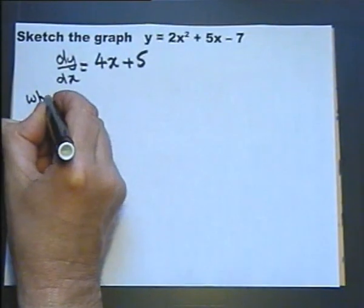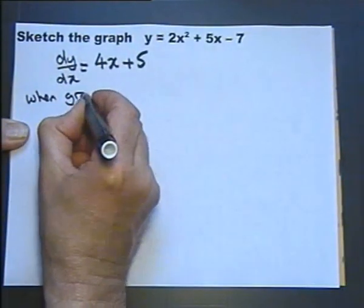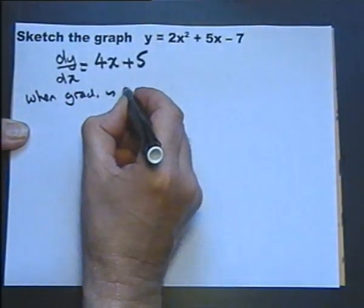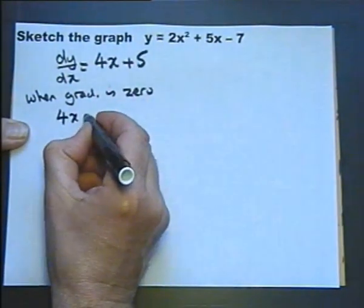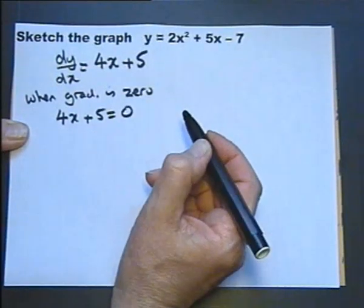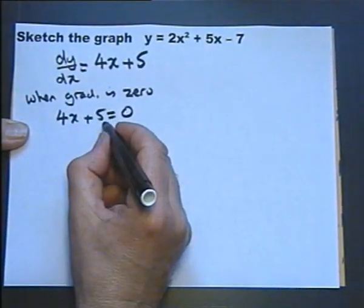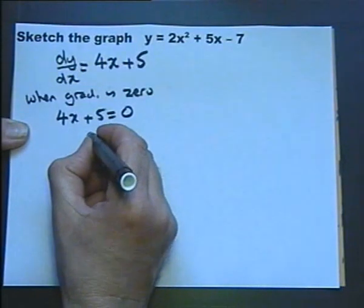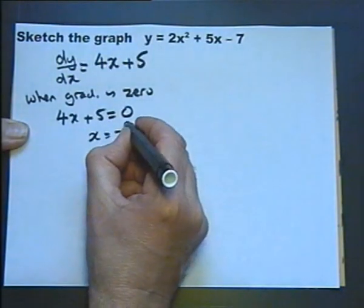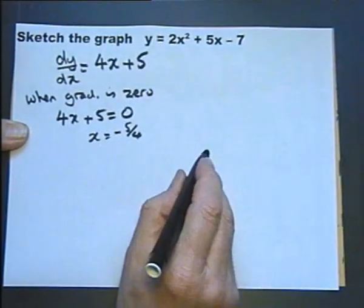So when the gradient is 0, this will equal 0. So if we subtract 5 from both sides, and divide both sides by 4, we'll get the answer of minus 5 over 4, or 1 and a quarter.